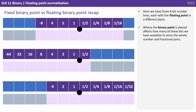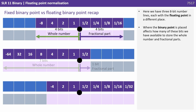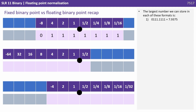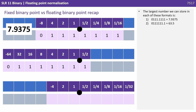Here we have three 8-bit number lines each with the floating point in a different place. Where the binary point is placed affects how many bits we have available to store the whole number and the fractional component. The largest number we can store in each format: for the first it's 0111.1111 or 7.9375; the second is 0111111.1 which is 63.5; and for the final version it's 011.11111 or 3.96875.